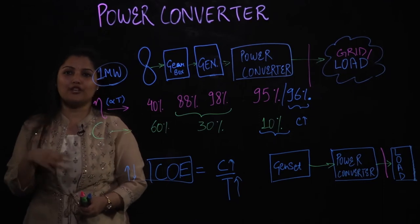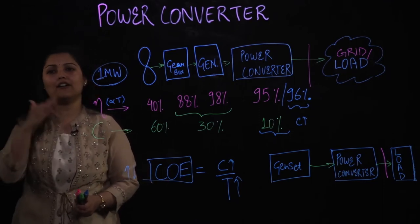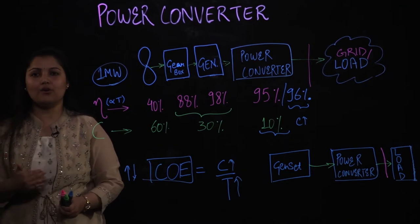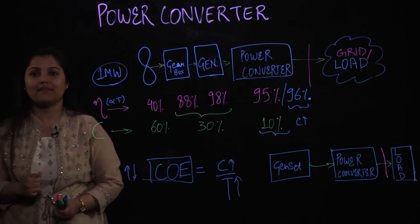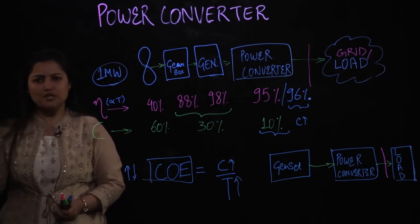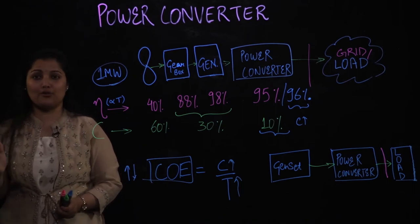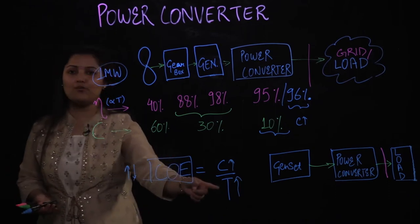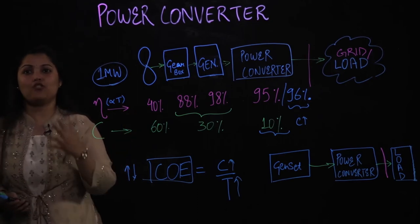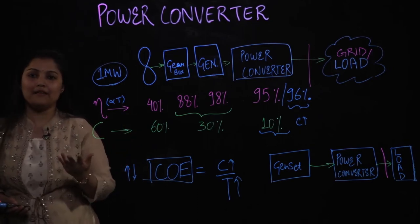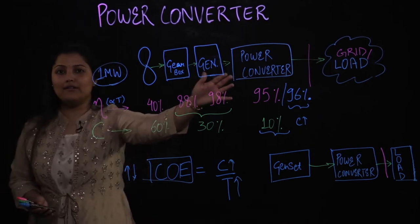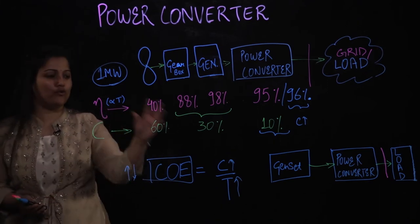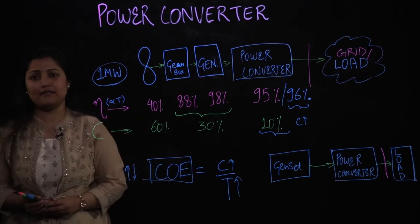These power converters with higher efficiency typically come with added features. For example, for a solar converter you have maximum power point tracking (MPPT), which gives you so much more power compared to a conventional controller that the total power you are producing becomes many fold and the cost of energy changes dramatically. Having a smart converter can really impact the cost and the overall system efficacy becomes very high.